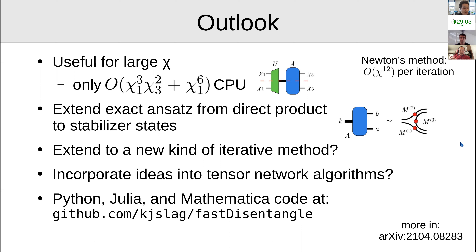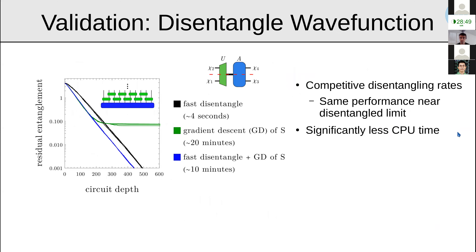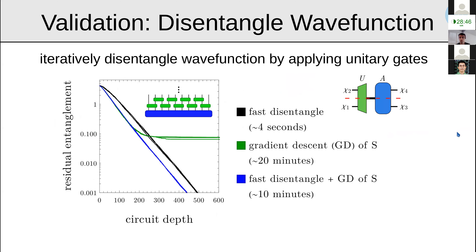[Q&A] On combining the fast disentangler with gradient descent: the fast method is applied first, then gradient descent is applied afterward — sequentially, not interleaved. Each iteration uses the fast method as initialization before running gradient descent.